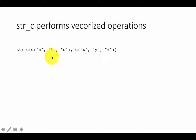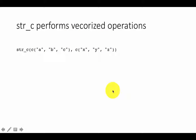So for example, it's going to first combine A with X, then B with Y, and then C with Z. The result is going to be AX, BY, CZ — three strings. So that's what it's going to do.